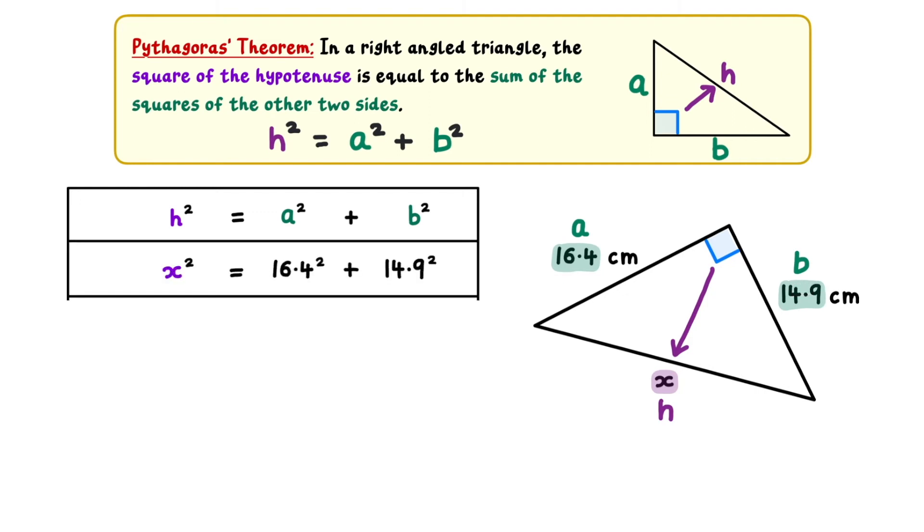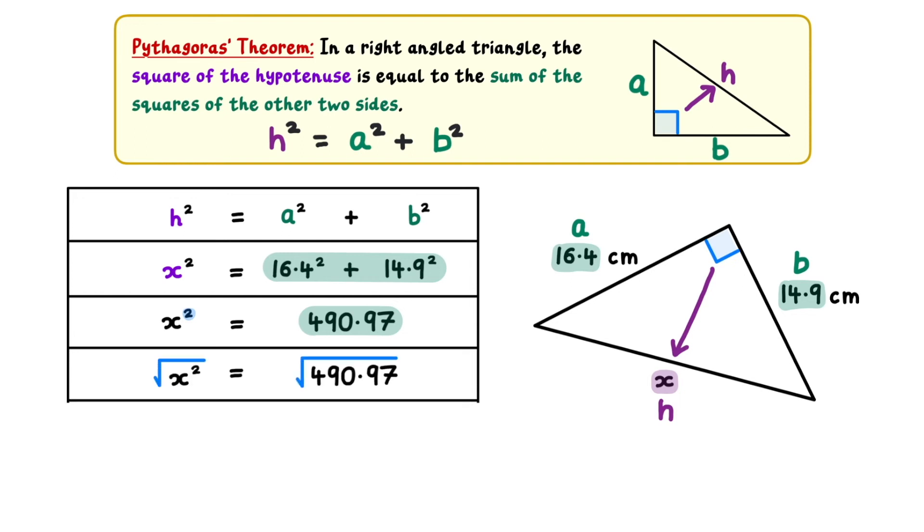Putting these values into the statement of the theorem tells us that X-squared equals 16.4-squared plus 14.9-squared. Using our calculator to compute the right-hand side, we see that X-squared equals 490.97. Like before, we can remove the squared operation by taking the square root of both sides. Using our calculator again to compute the square root on the right-hand side, tells us that X is approximately equal to 22.2cm.